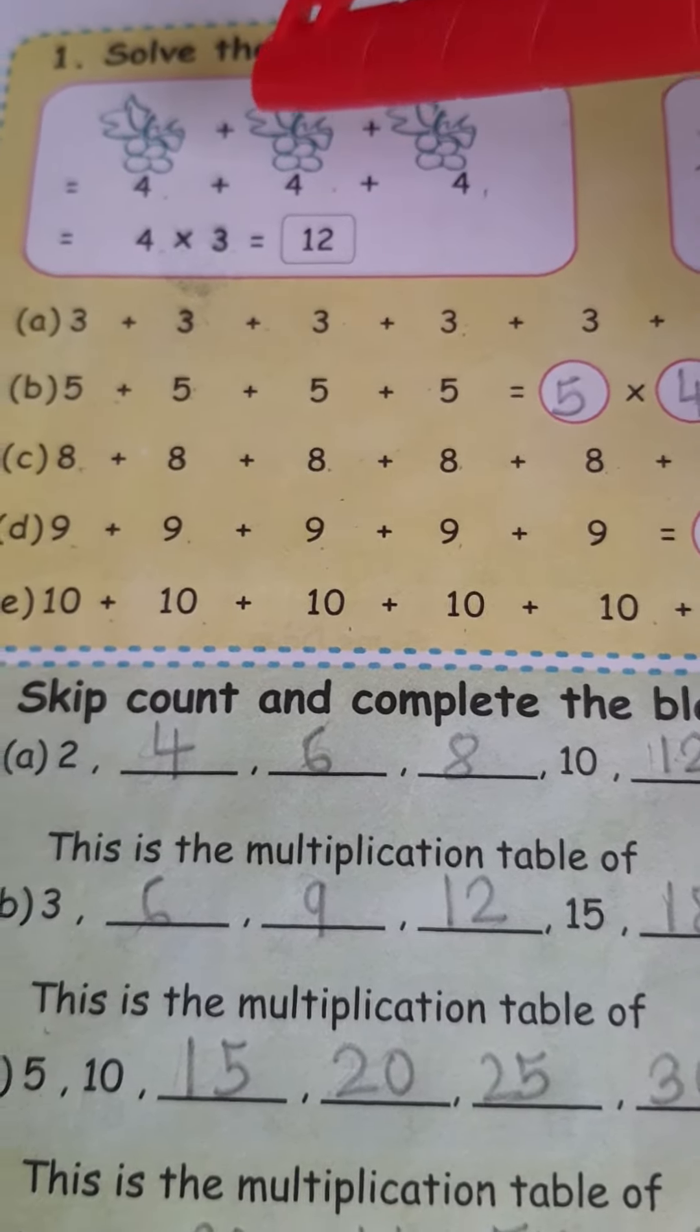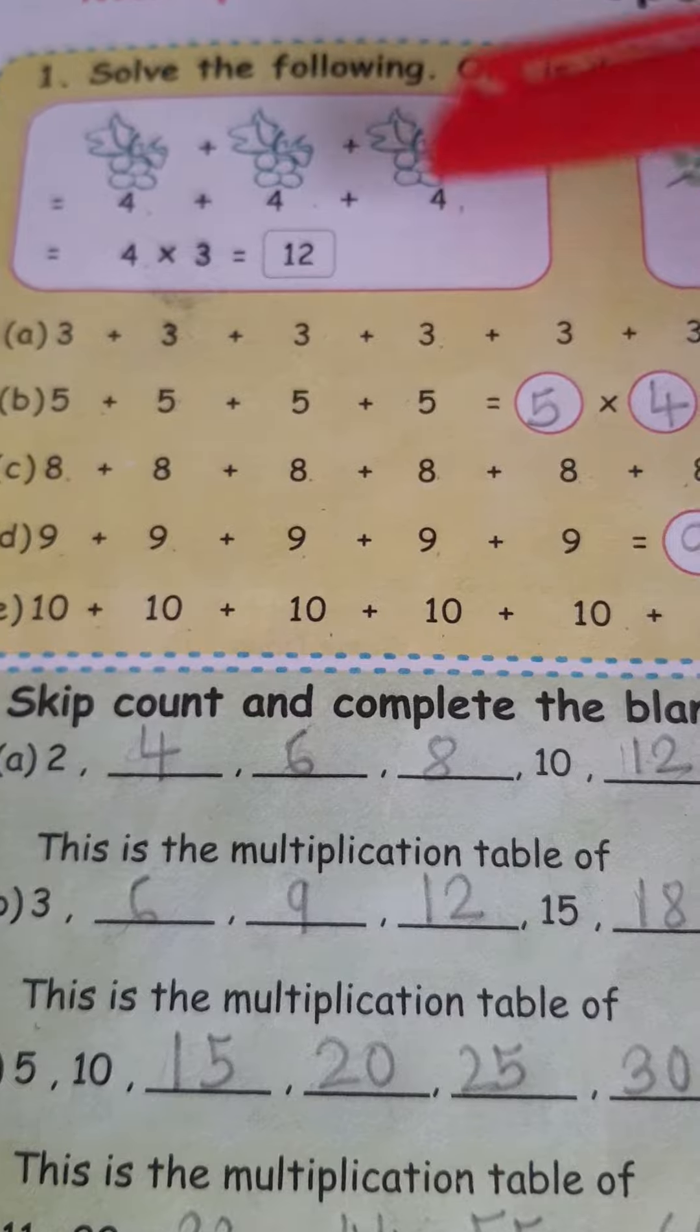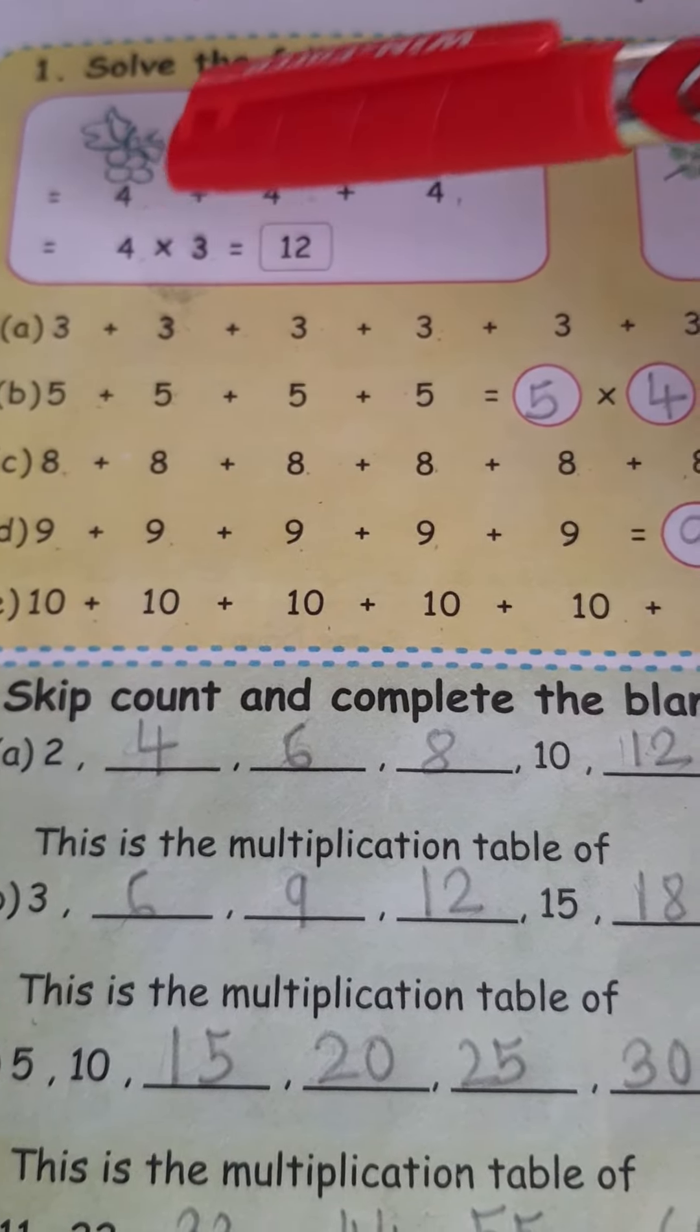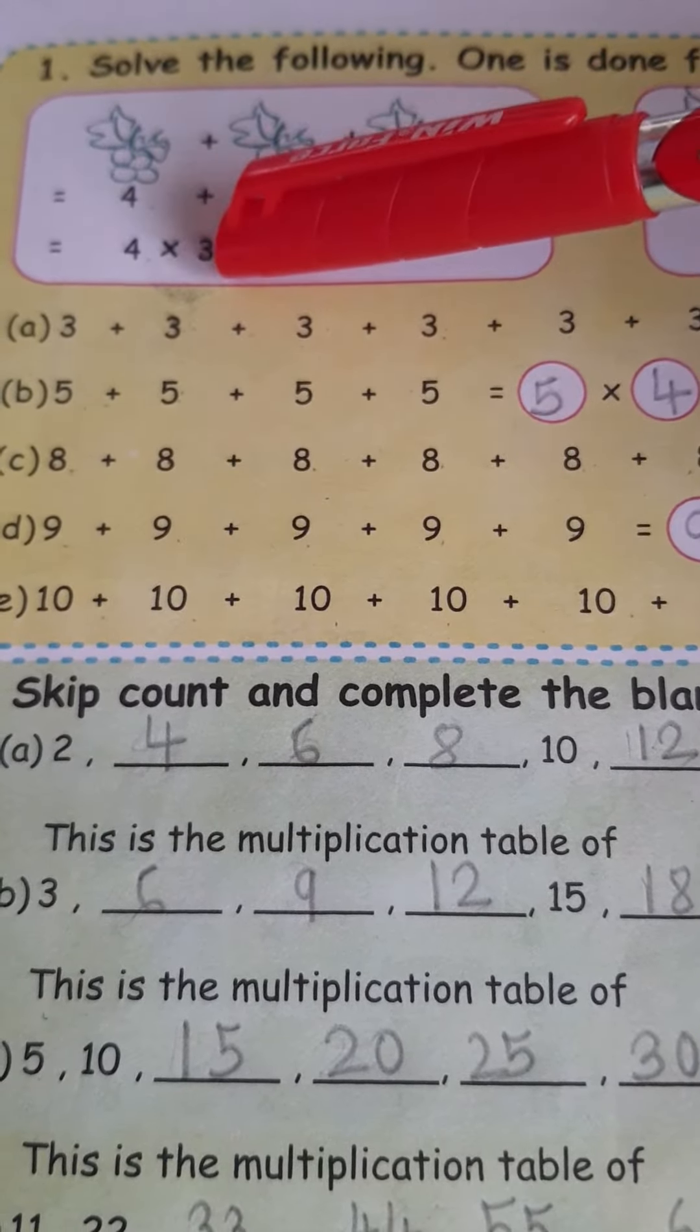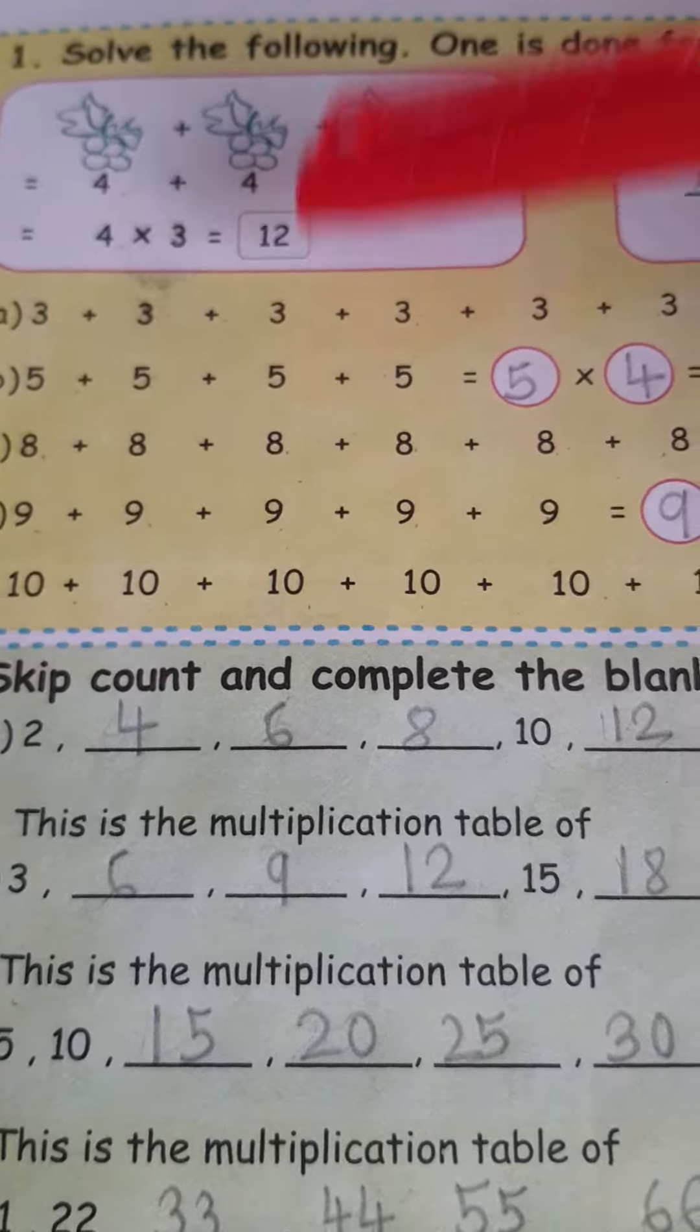Again, 4. So, how many times 4? 3 times. So, 4 multiply sign 3 equals to 12. 4, 3 is the 12.